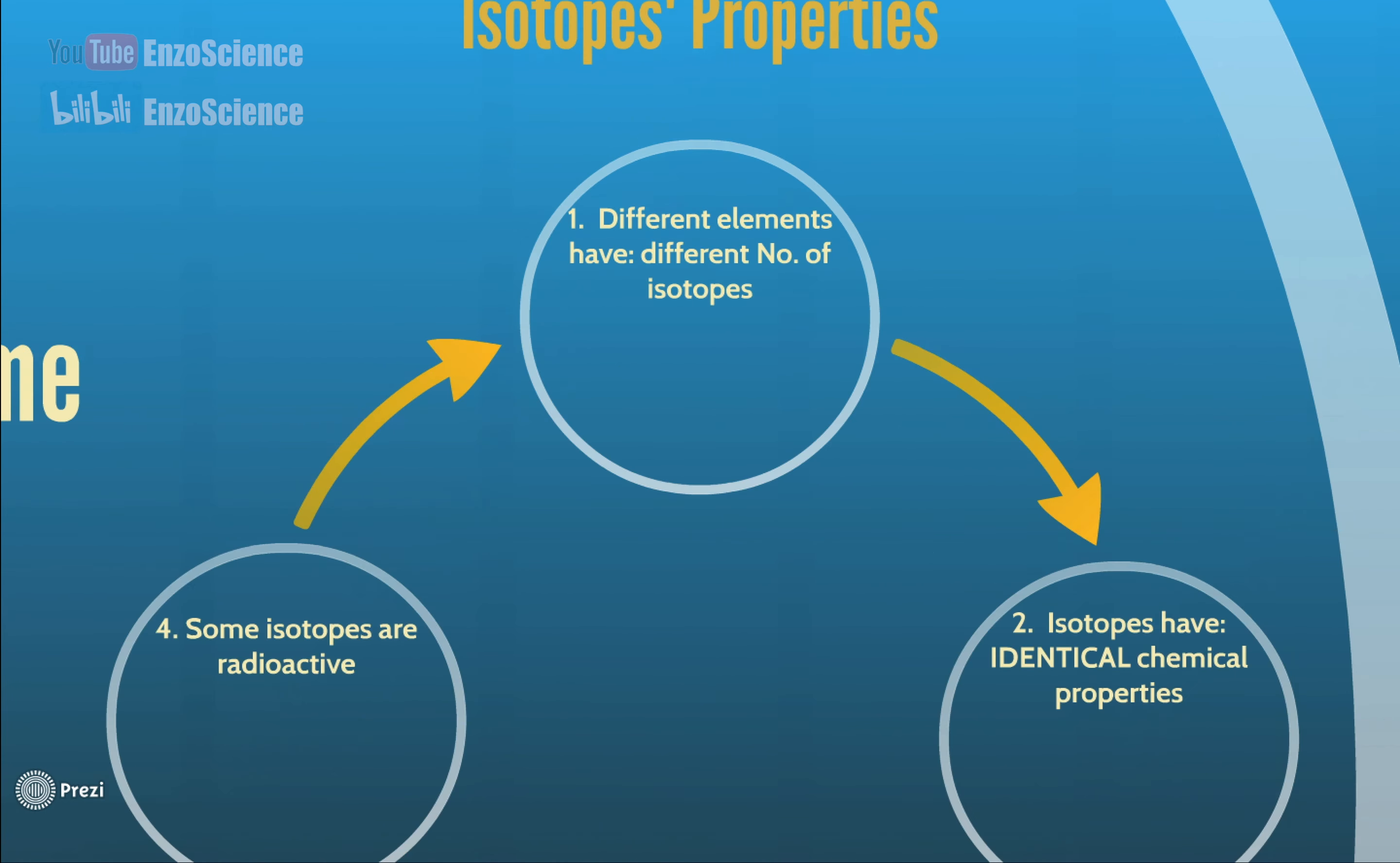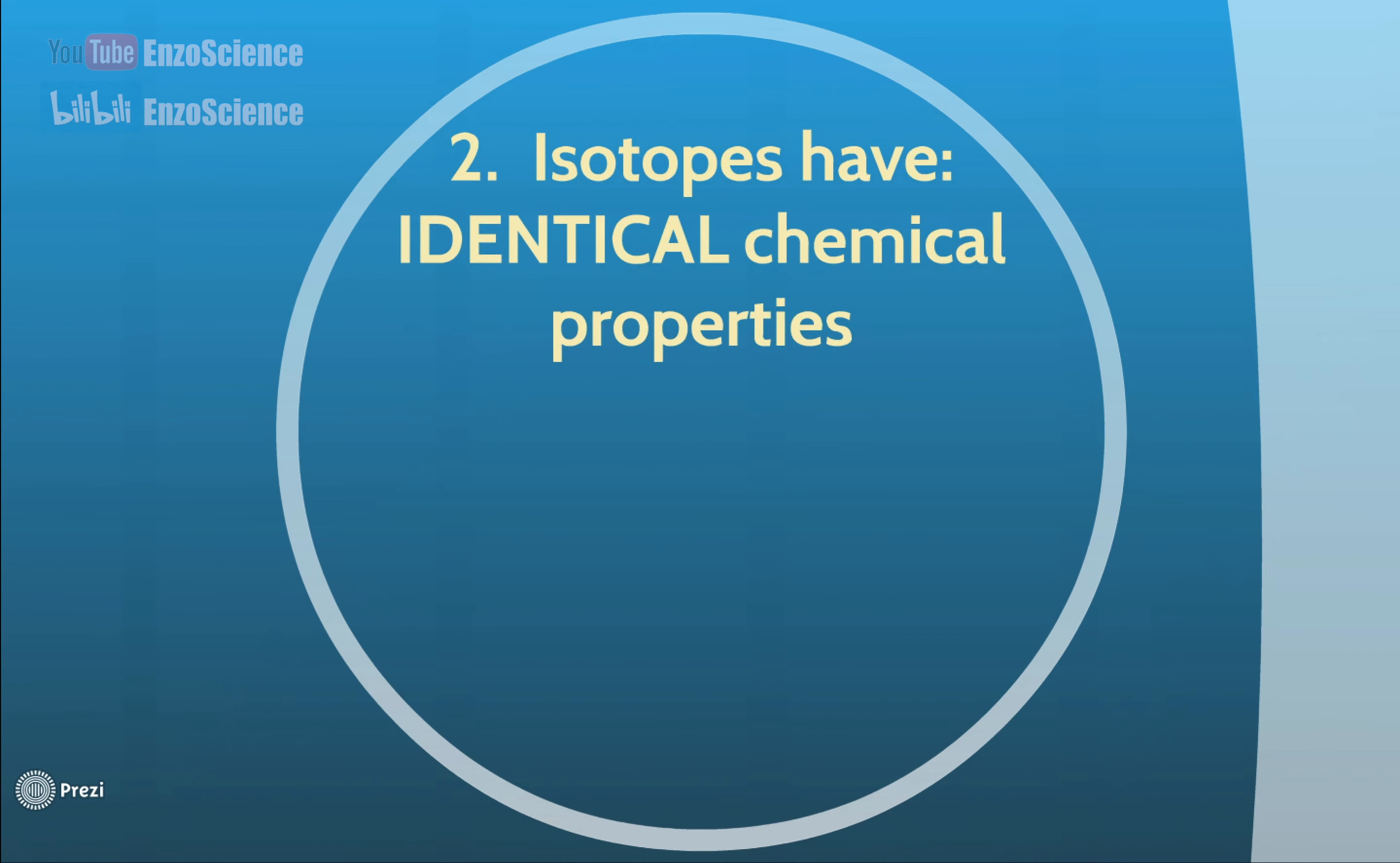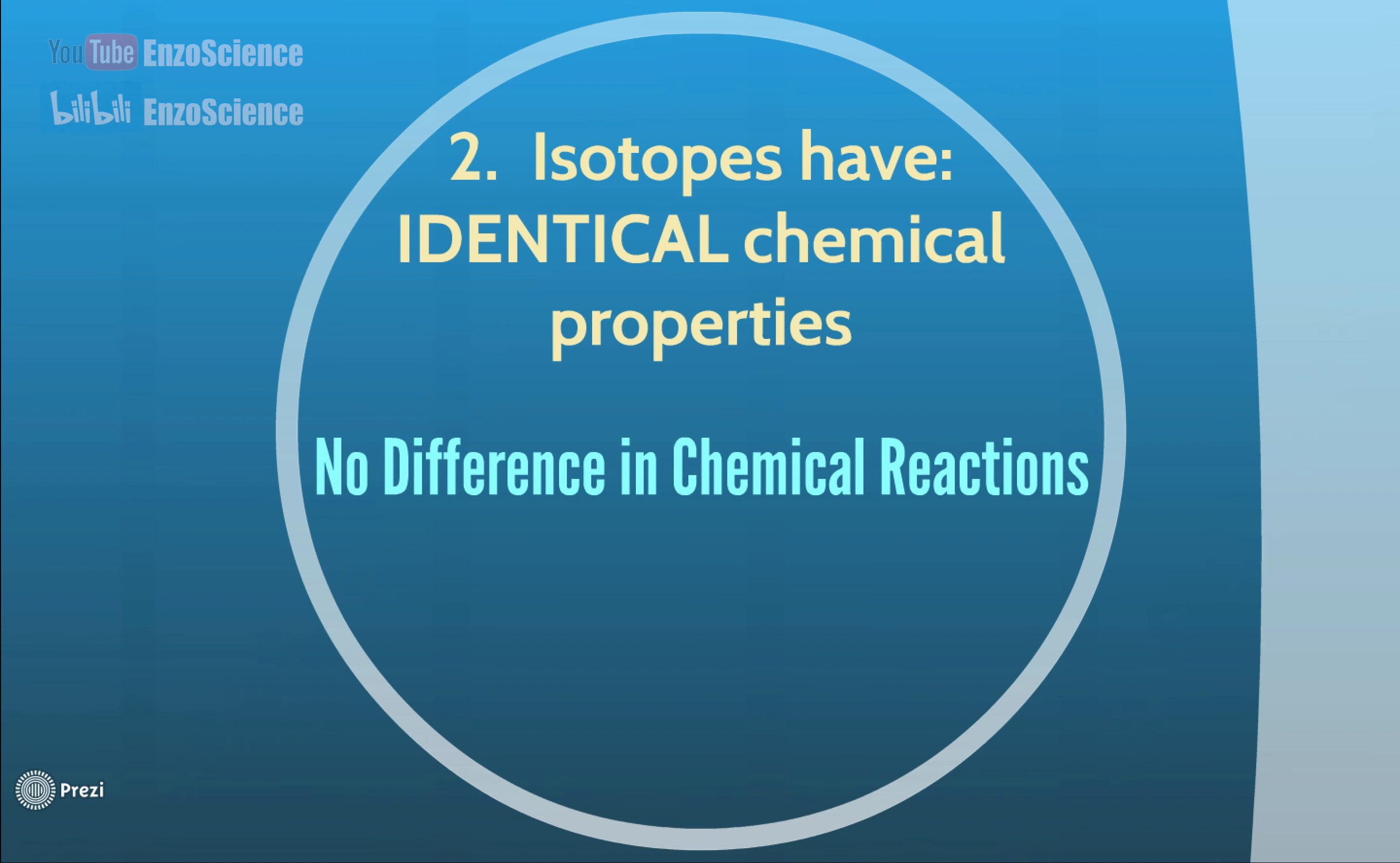Point 1: Different elements have different number of isotopes. For example, hydrogen has three isotopes, but chlorine only has two. Point 2: Isotopes have identical chemical properties, which means there's no difference among them when they are involved in chemical reactions, which means we do not need to distinguish them during chemical reactions.